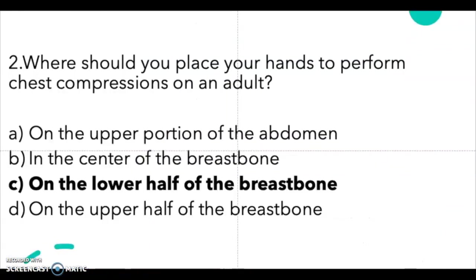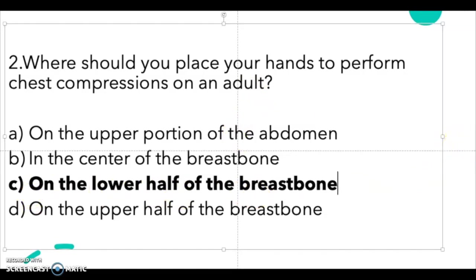Question 2: where should you place your hands to perform chest compressions on an adult? A: on the upper portion of the abdomen, B: in the center of the breastbone, C: on the lower half of the breastbone, D: on the upper half of the breastbone. The correct answer is C — on the lower half of the breastbone. That's where you place your hands to perform compressions.